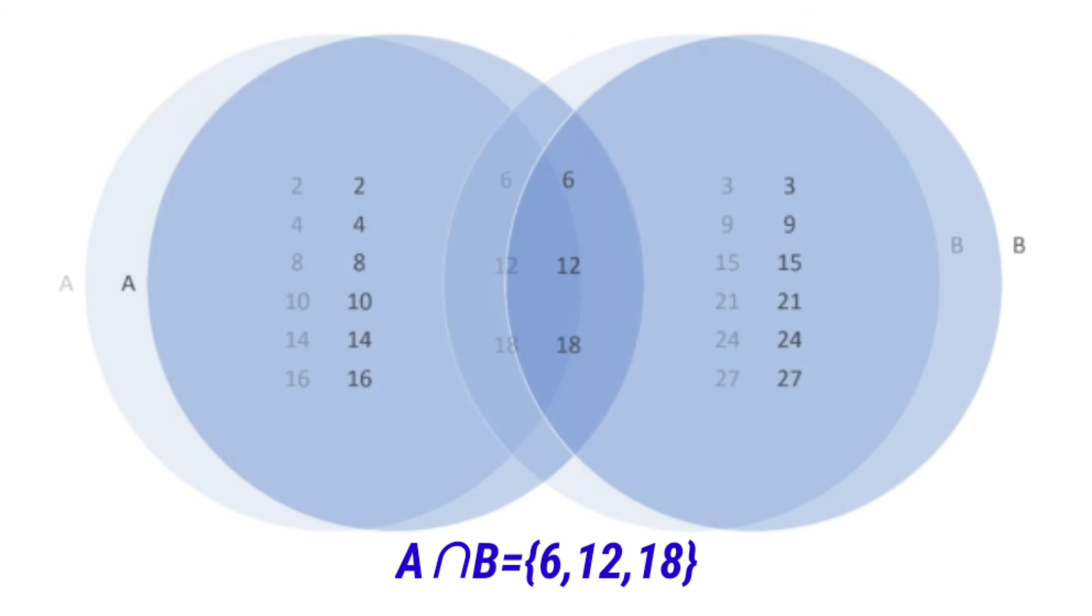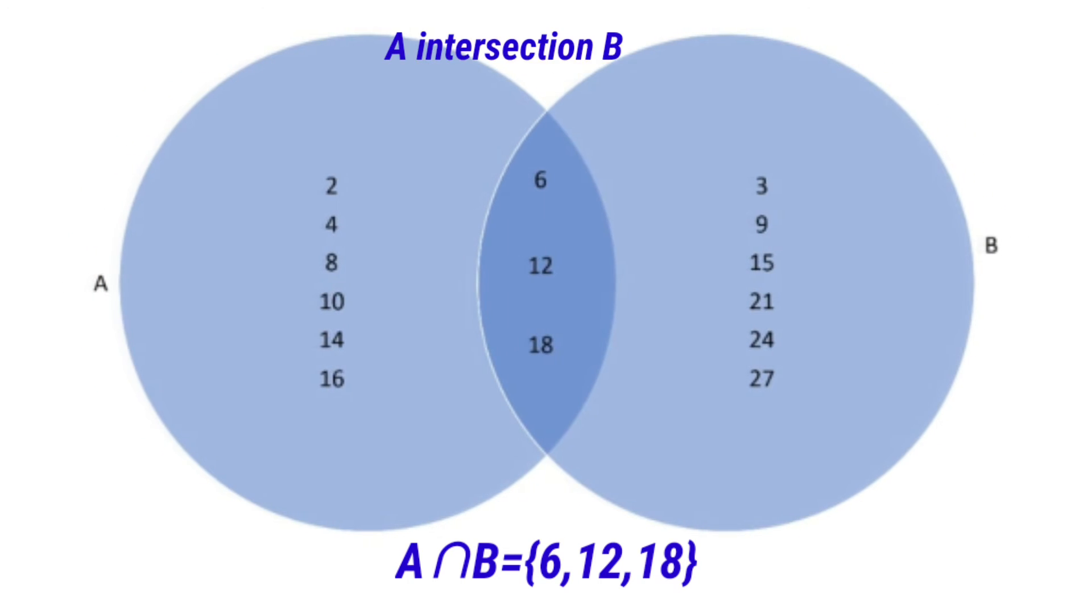A intersection B means the common elements in set A and set B only. That means the elements which belong to both set A and set B.